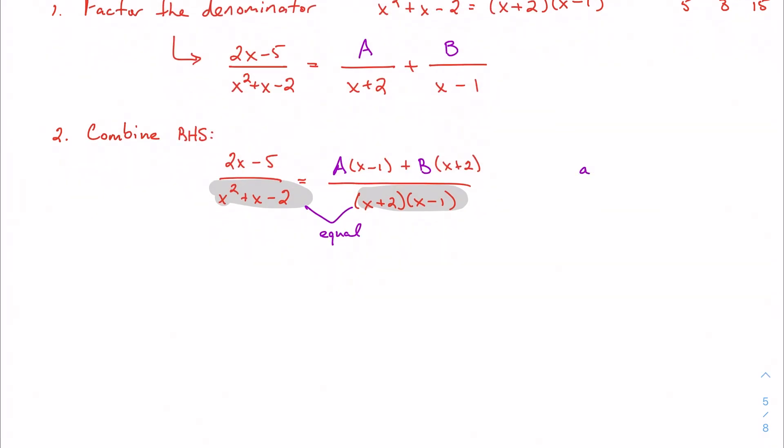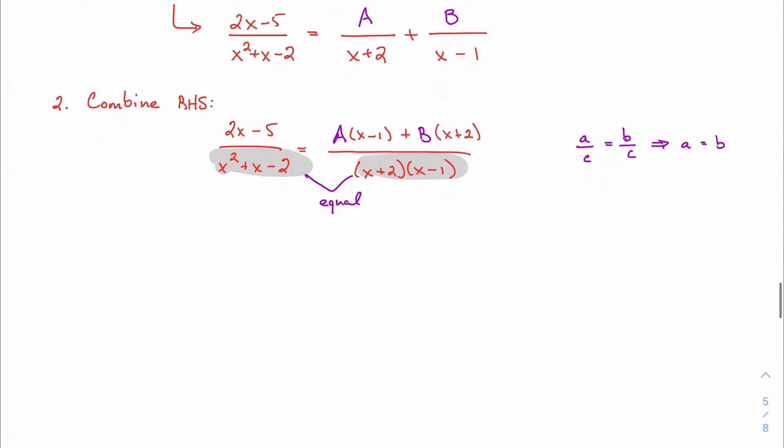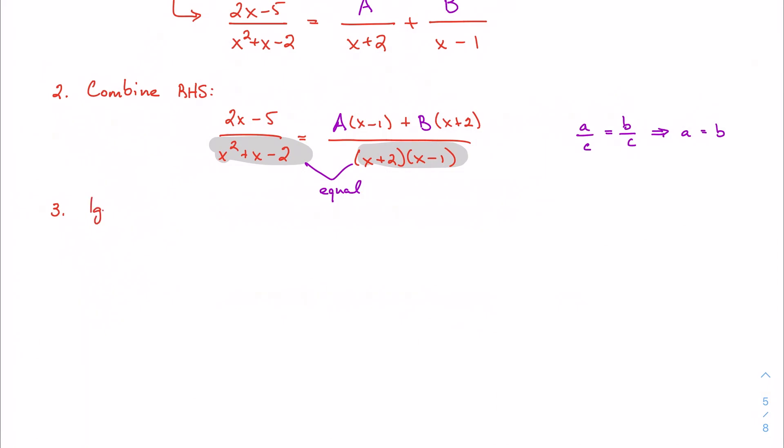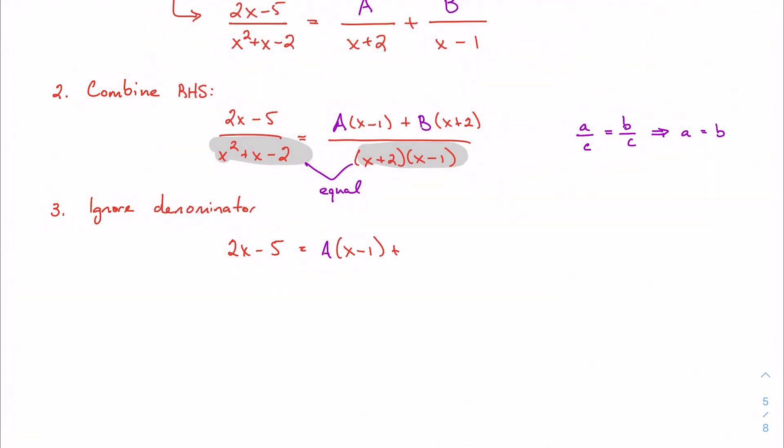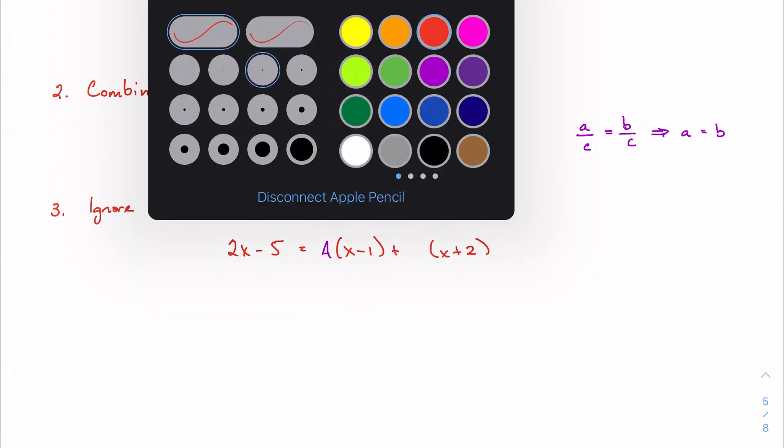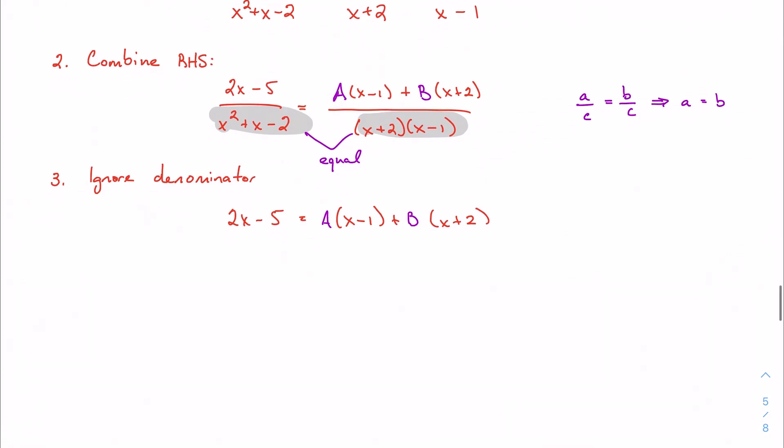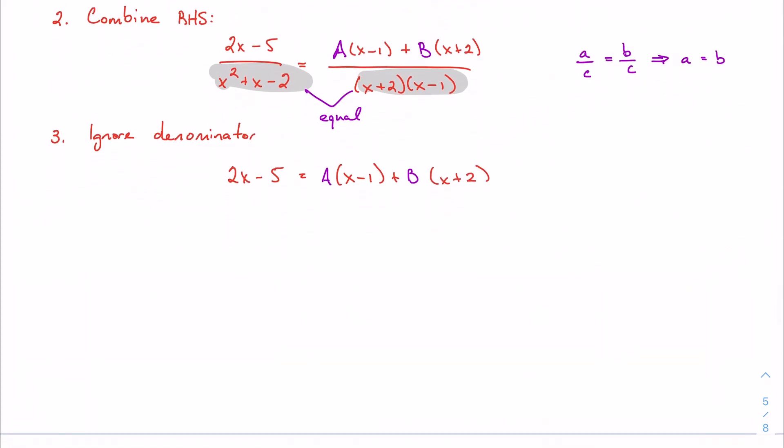And of course, one of the properties we have is that if I have a over c and b over c, then a and b are equal to each other, and I can basically ignore the denominator. And that's exactly what I'm going to do here. That's just my third step, is ignore the denominator. But essentially what I'm left with is 2x minus 5 equals A times x minus one plus B times x plus two, just like this. This is the piece that we want to focus on. This is the important part here.